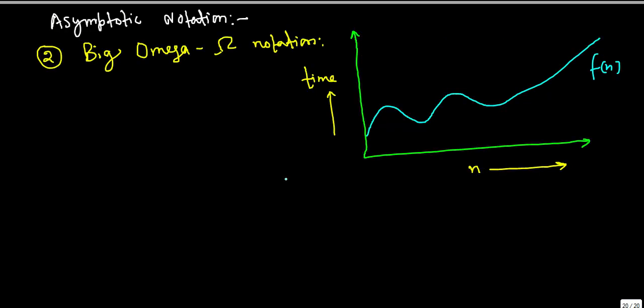Now let us start our new tutorial on asymptotic notation and the second notation is Big Omega notation. Similarly, we have a problem for which if we have found an algorithm whose running time is F(n).